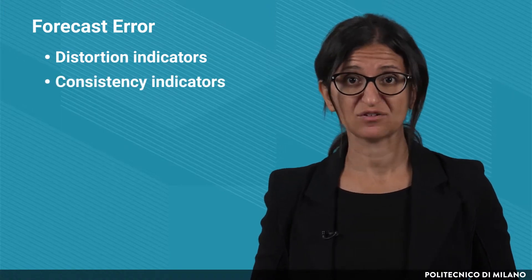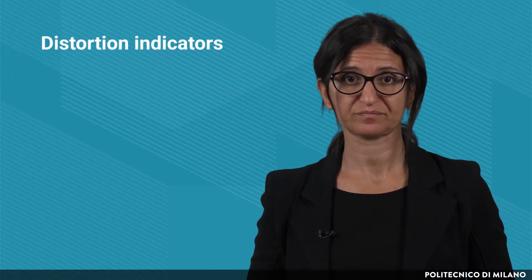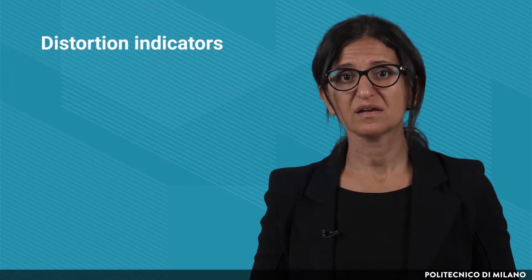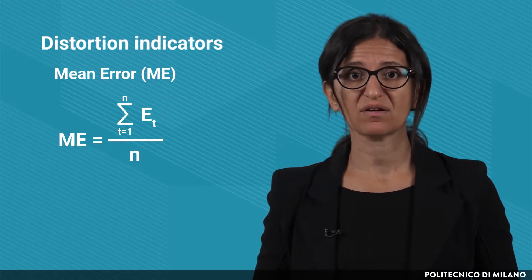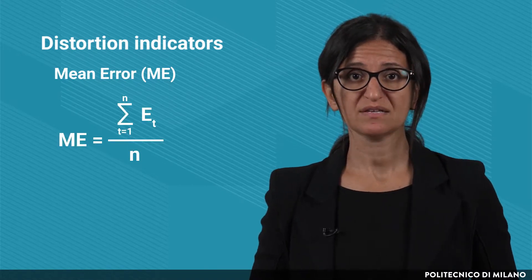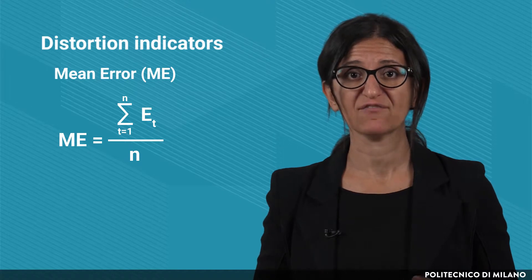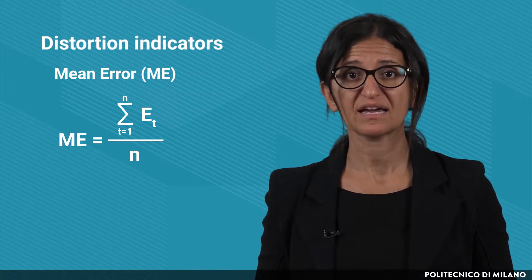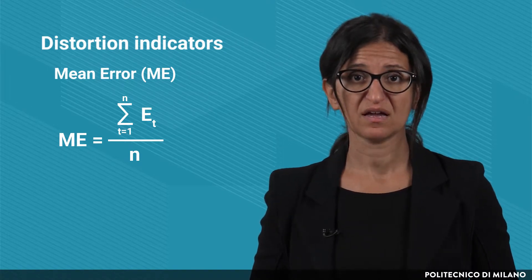Let's start with the indicators measuring the distortion. The most adopted one is the mean error. The mean error is very easy to compute, since we just need to take the average of the forecast errors in a defined time horizon.